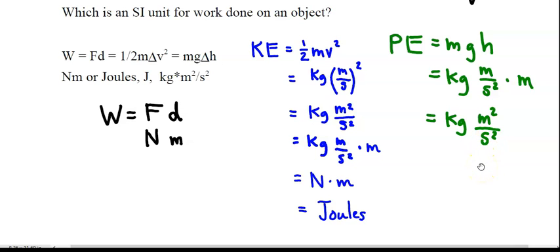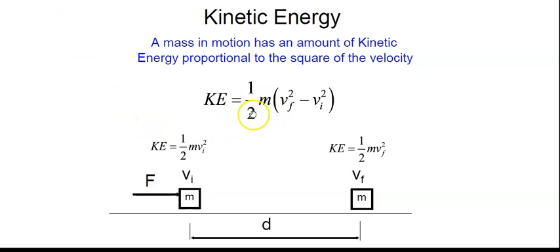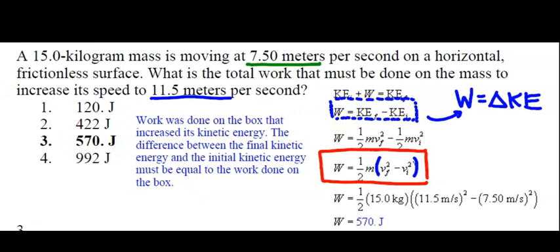Let's take a look at another problem. We're now going to use the KE equals one half m v final squared minus v initial squared in a sample problem. Here we have a 15 kilogram mass moving at 7.5 meters per second on a horizontal frictionless surface. It's important to note that the surface is frictionless because we won't have any friction losses to account for in this problem. What is the total work that must be done on the mass to increase its speed to 11.5 meters per second? We recognize that there's been a change of speed and we know that the work is equal to that change of kinetic energy.